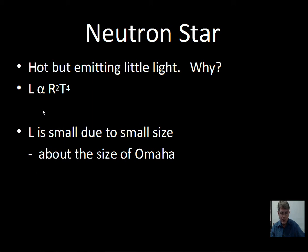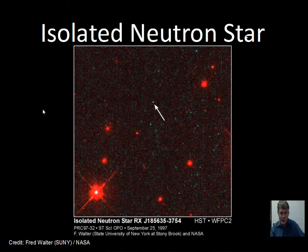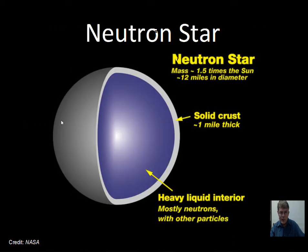To summarize, a neutron star has about two times the mass of the Sun and is roughly the size of Omaha, Nebraska — about 12 miles across. A photograph taken with the Hubble Space Telescope shows one at the end of an arrow using a long time exposure. A cutaway model shows that the neutrons are not in a completely solid crystal structure inside, but there is a solid crust, and this crust can have neutron star quakes — shifting around a little bit. Most of the interior is neutrons, not separate protons and electrons.